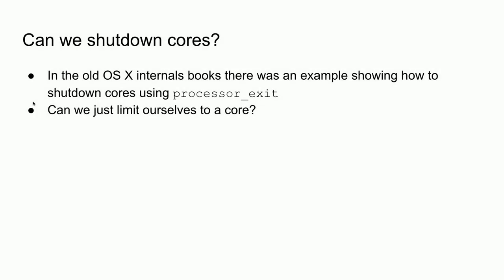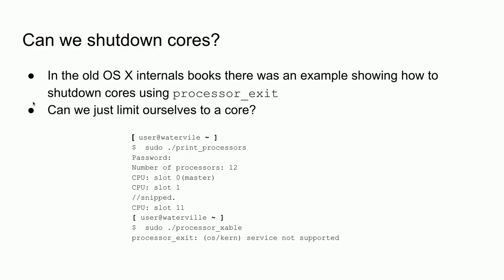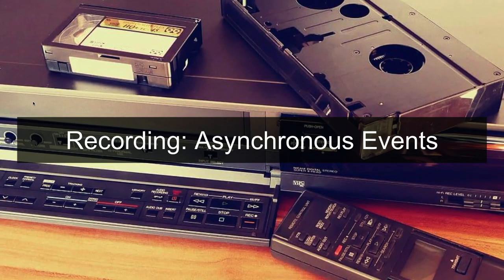Amit Singh's old OSX Internals book has an exercise where you print all processors and then shut down cores by calling processor_exit, which temporarily removes them from the scheduler. So what if we just limit ourselves to a single core? That doesn't work anymore either.